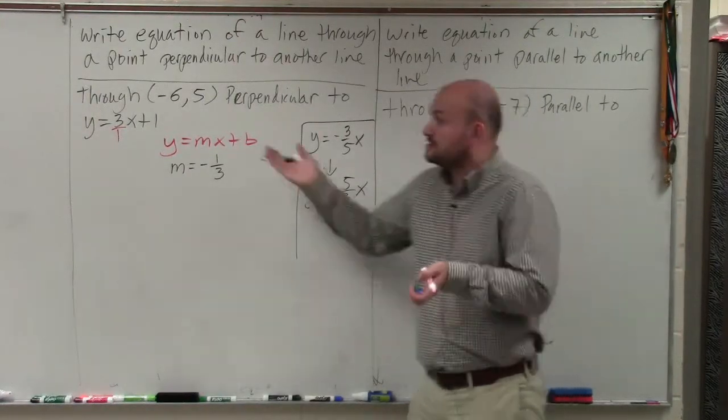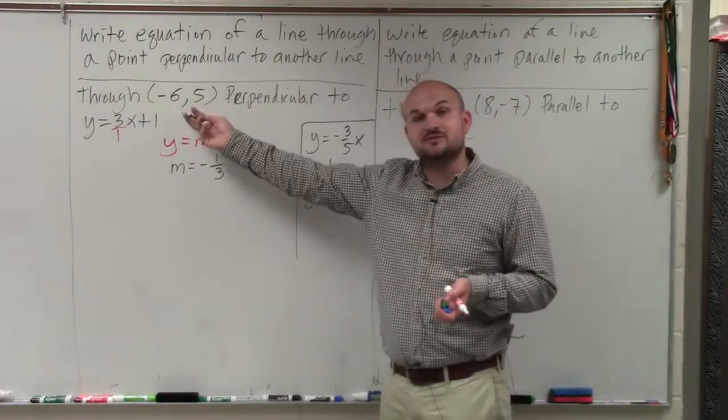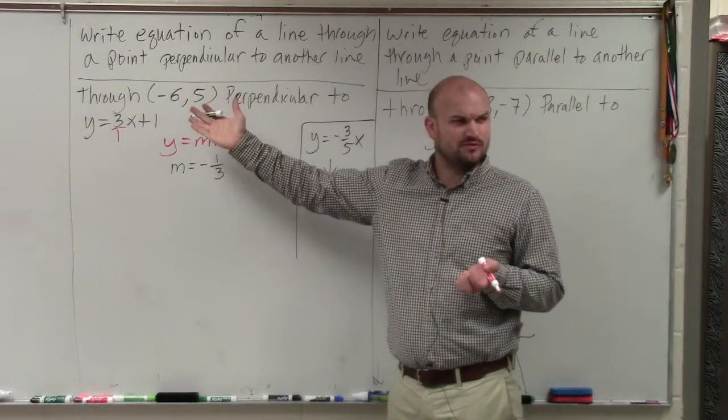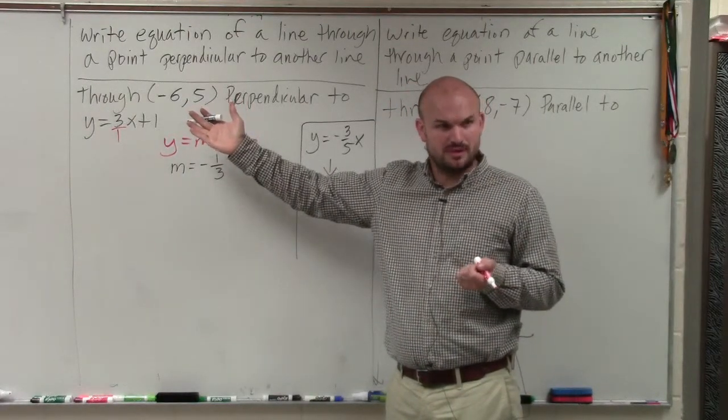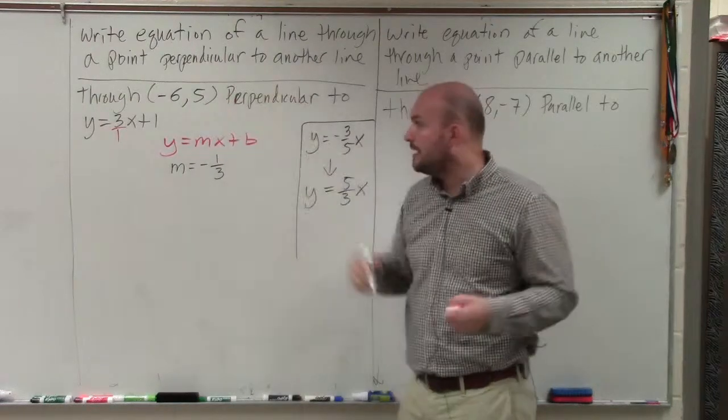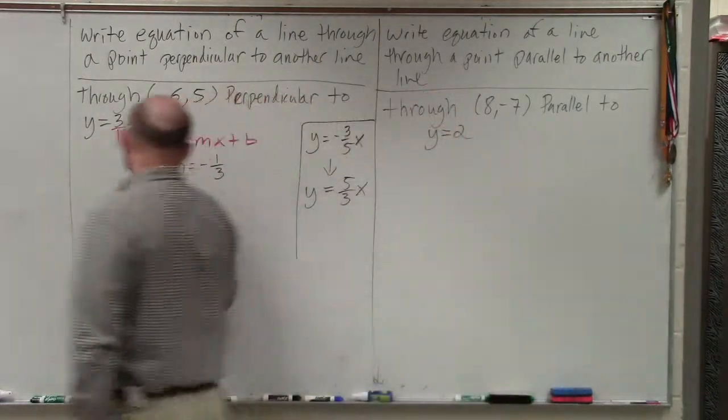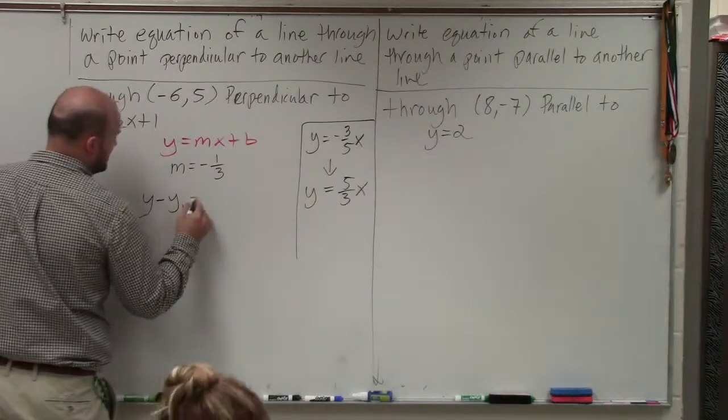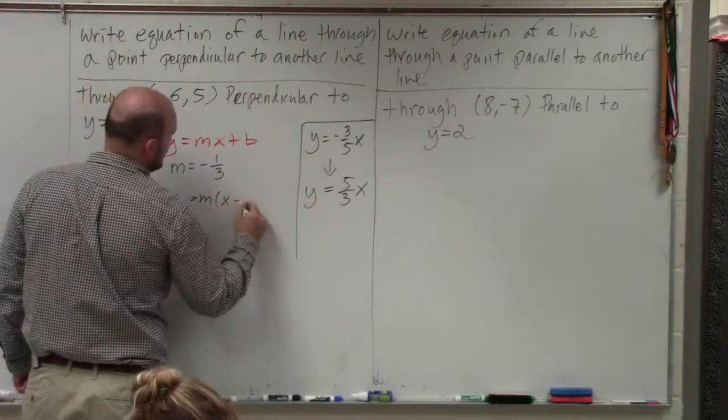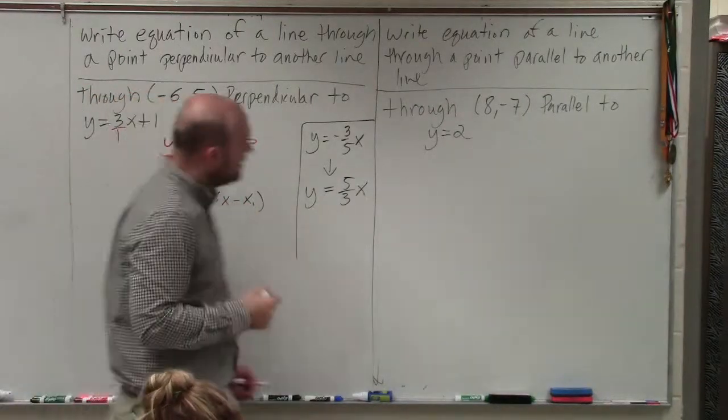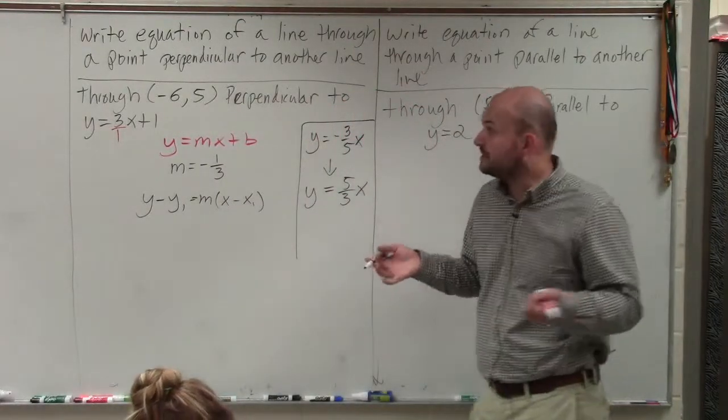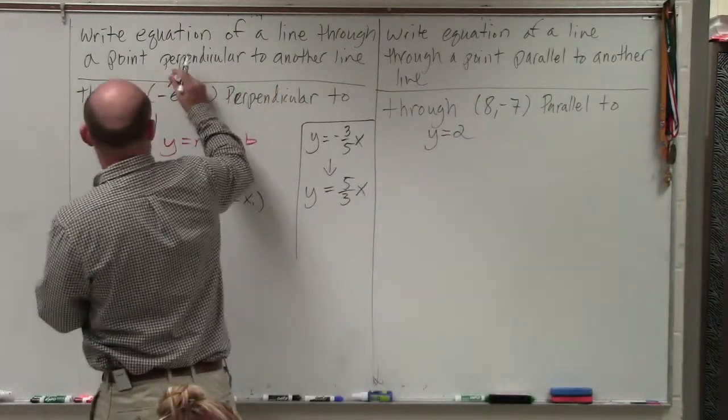we know that's our slope. Now we just need to go through a point. Did I show you point-slope form and slope-intercept form? I'm going to use point-slope form for this one. So I'll do y minus y1 equals m times x minus x1. And x1 and y1 represent the point that it goes through, which we are given right here.